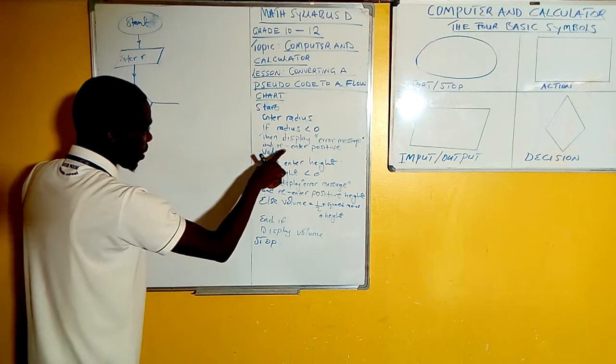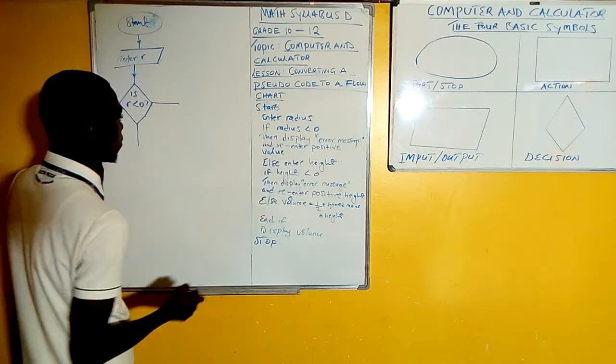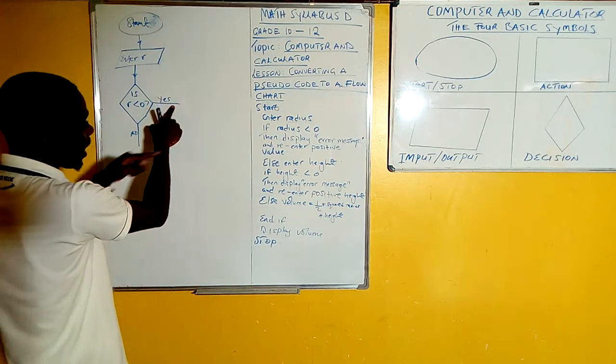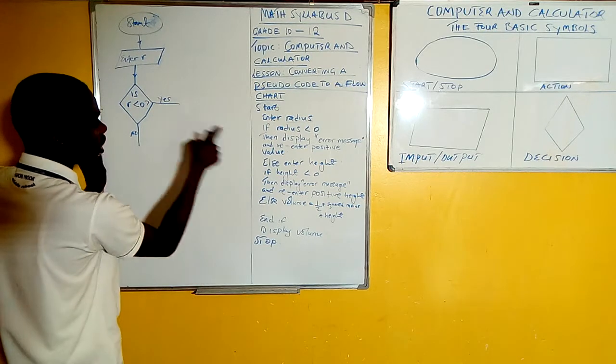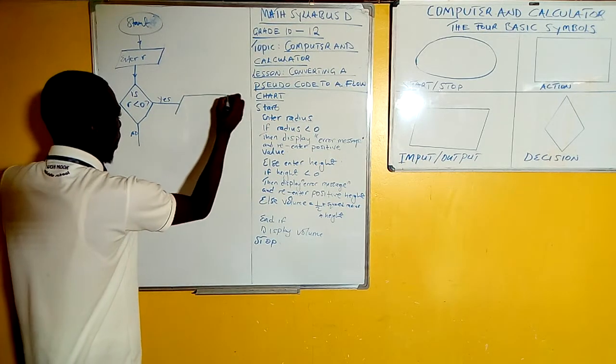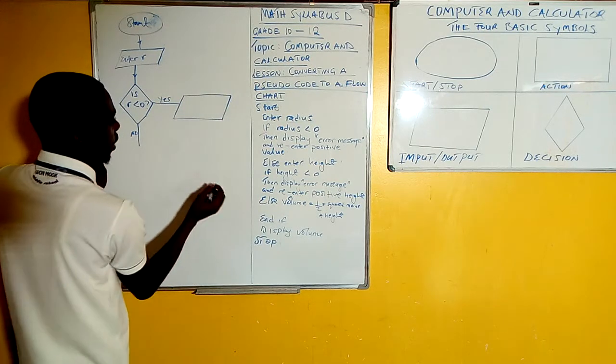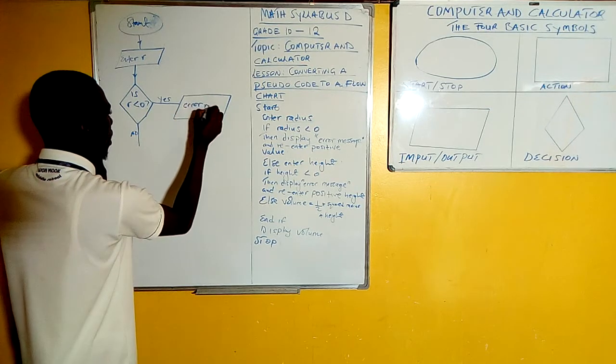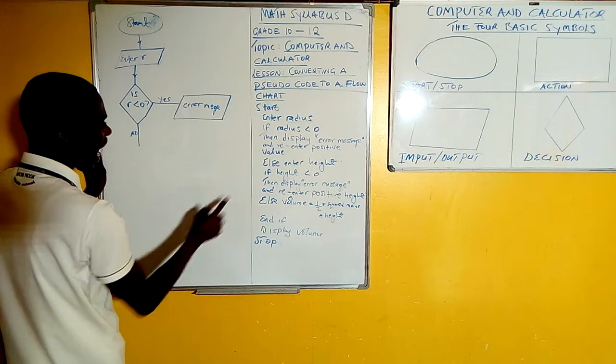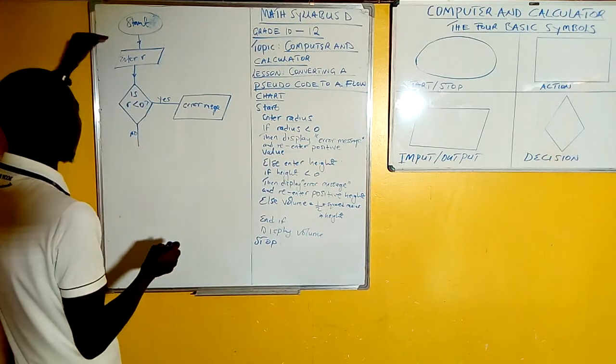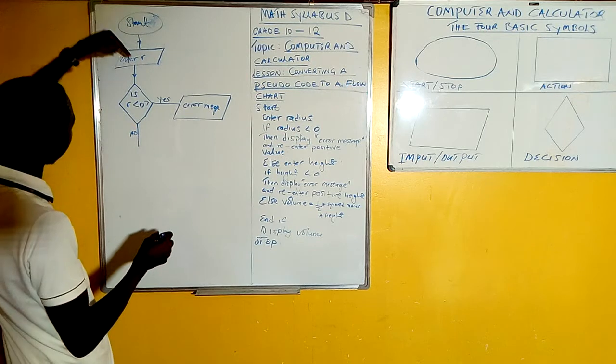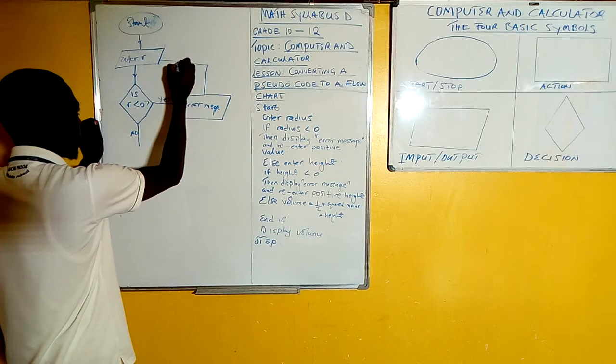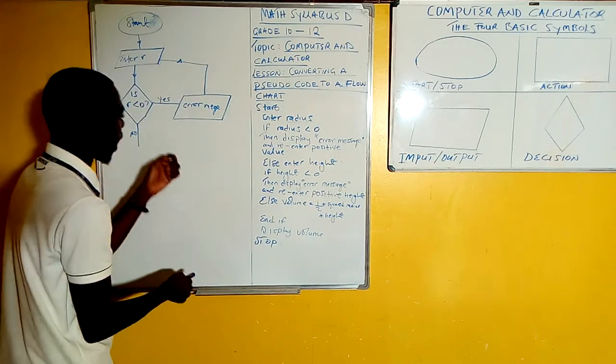Now here they're saying if radius is less than zero, then display error message and re-enter positive value. So meaning if yes, if no. If it is less than zero, then you have to display. The display symbol is this one. So here now they're saying display error message. So here you are displaying simply the error message. Display error message and re-enter positive value. Re-enter where you are entering from - the r is here. So meaning the first r you entered was wrong, so you have to re-enter. That is where this loop now goes back. So you re-enter, you start afresh.